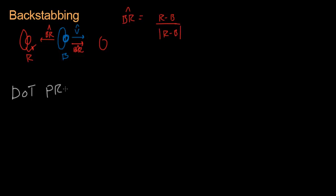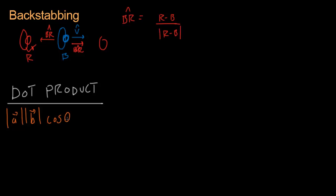A dot product is a relationship — you can think of it as a relationship between two vectors. The mathematical definition of a dot product is: the length of vector A multiplied with the length of vector B multiplied with the cosine of the angle between the two vectors. So if you have two vectors with angle theta between them, you take the length of one times the length of the other times cosine of theta. This is the math and physics definition of a dot product.